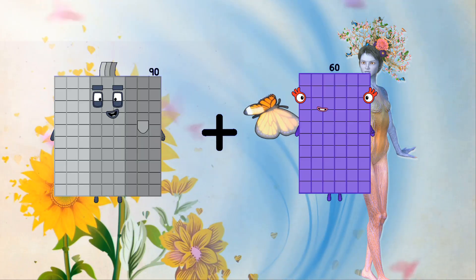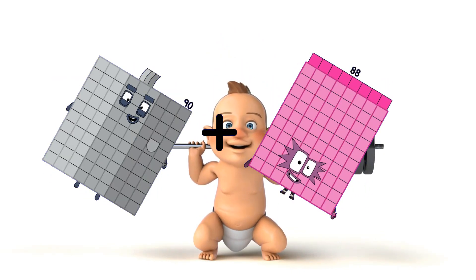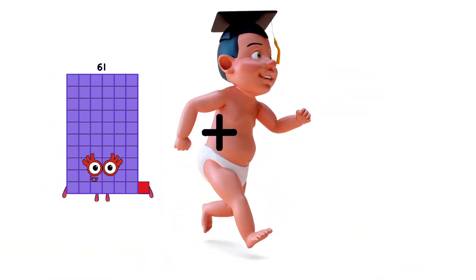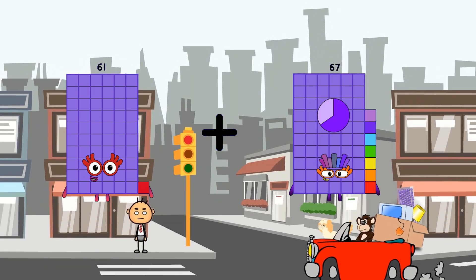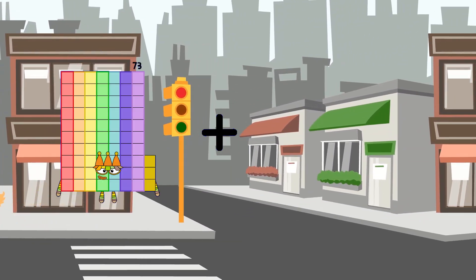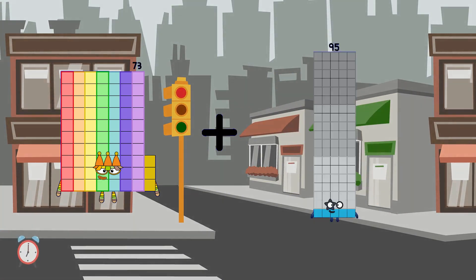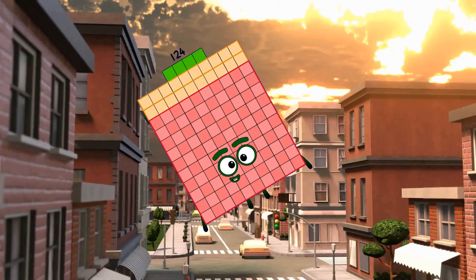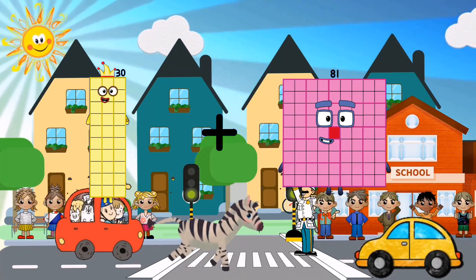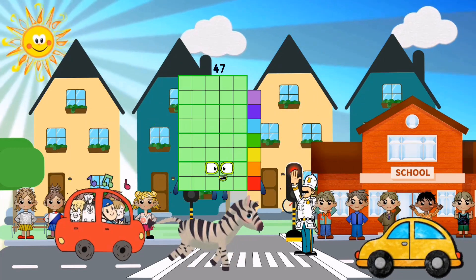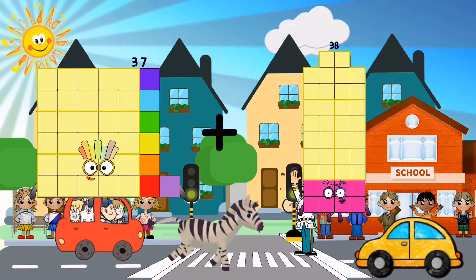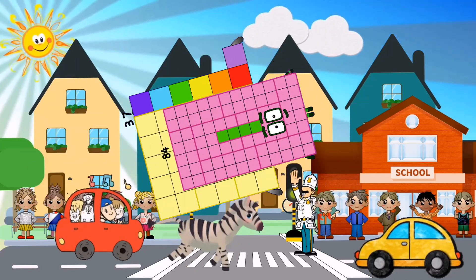90 plus 88 equals 178. 61 plus 67 equals 128. 73 plus 51 equals 124. 30 plus 17 equals 47. 37 plus 84 equals 121.